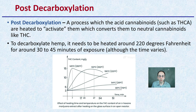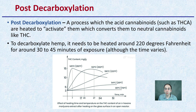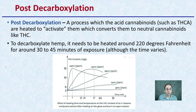Looking at the definition of post-decarboxylation: this is a process by which acid cannabinoids, such as THCA, are heated to an active form, converting them to neutral cannabinoids like THC. To decarboxylate hemp, it needs to be heated to around 220 degrees Fahrenheit for around 30 to 45 minutes of exposure, although that time does vary.